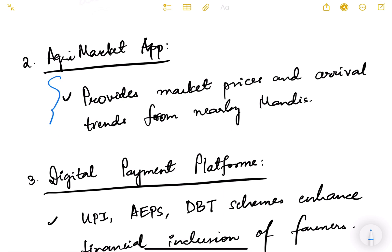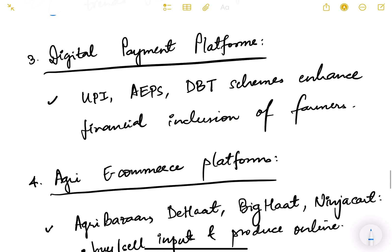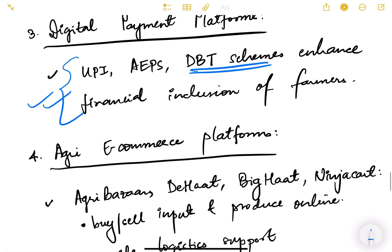Digital payment platforms like UPI, AEPS, and DBT schemes enhance financial inclusion of farmers. DBT schemes like PM-Kisan transfer money directly into farmers' accounts. Input assistance and government procurement of rice or wheat at MSP rates also transfer money directly to farmers' accounts. The JAM trinity — Jan Dhan, Aadhaar, and Mobile — is being used here to enable these transfers.